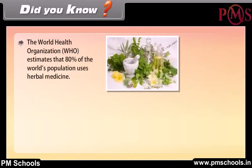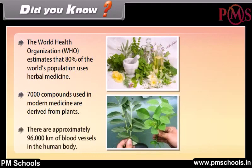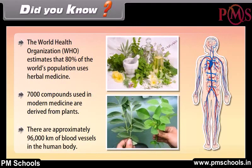Did you know? The World Health Organization estimates that 80% of the world's population uses herbal medicine. 7,000 compounds used in modern medicine are derived from plants. There are approximately 96,000 kilometers of blood vessels in the human body.